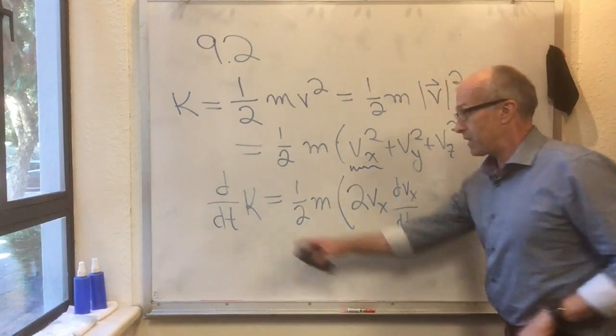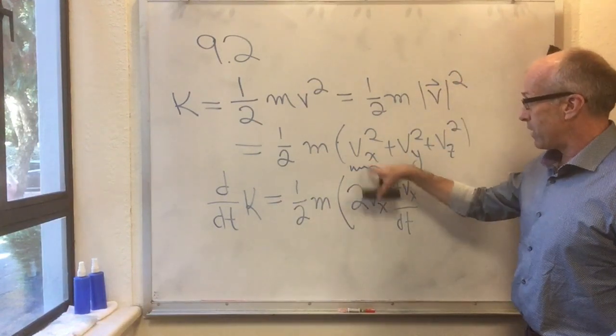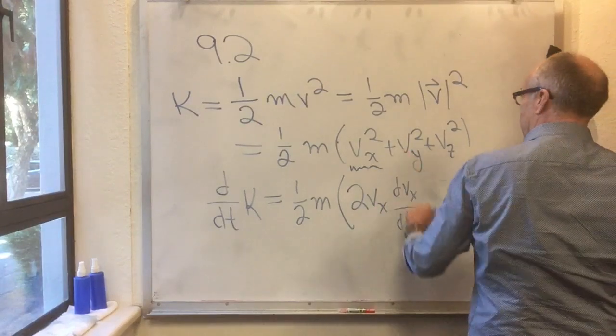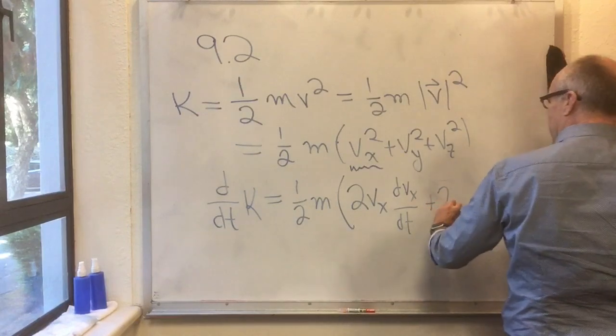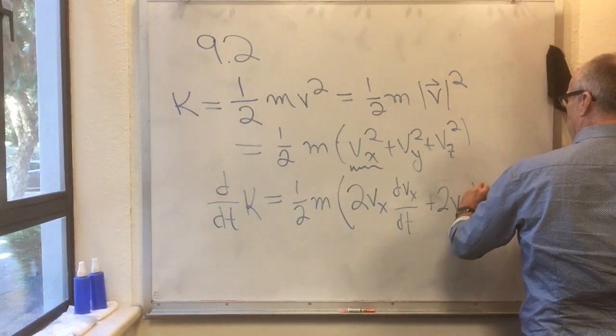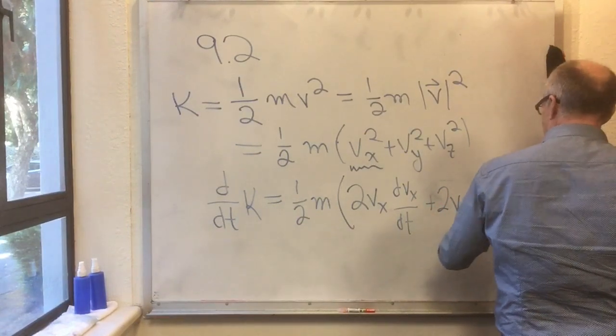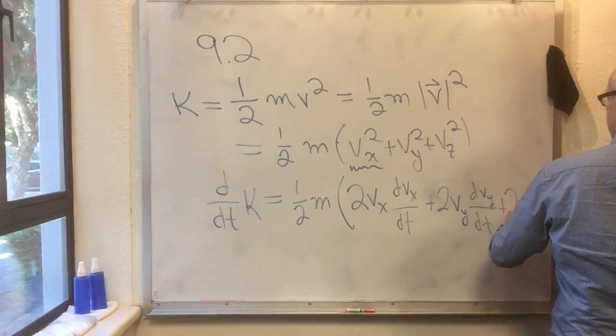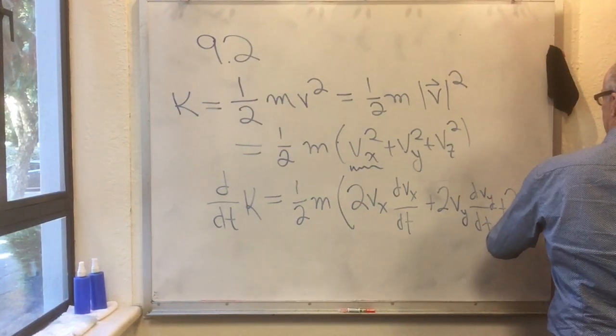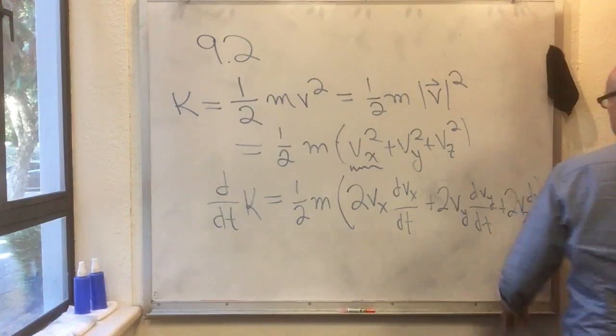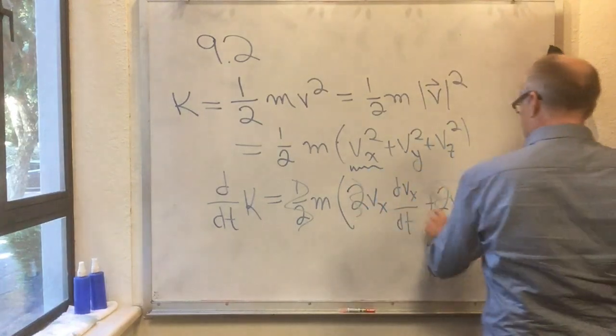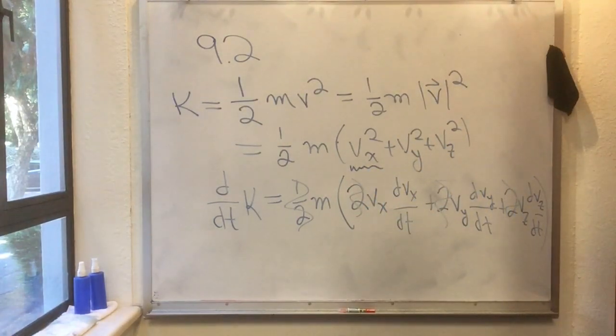So d by dt of K: this first term gives me 2Vx dVx/dt, the second term gives 2Vy dVy/dt, and the third term gives 2Vz dVz/dt. That's nice—all these halves and twos cancel.